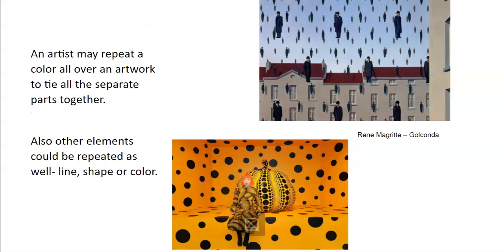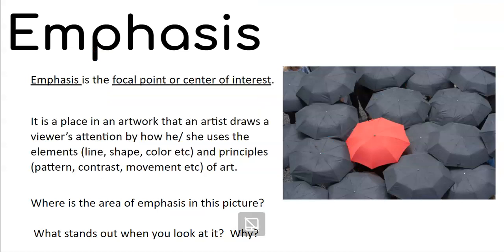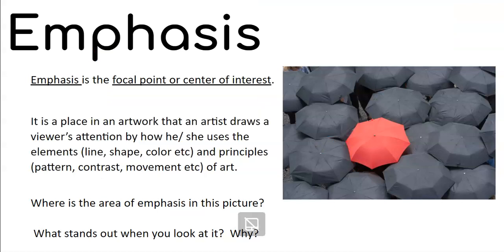Each of these artists is creating a unified artwork that really works together as one piece. The last thing we're going to talk about is emphasis. Emphasis is the focal point or the center of interest. If we look at these umbrellas, it's very easy to pick out which umbrella pops out at us — it's the one that's really different, a different color, and it really captures our interest. Emphasis is a place in the artwork where an artist draws the viewer's attention by how he or she uses the elements — line, shape, or color — and the principles — pattern, contrast, movement. That red umbrella is clearly the area of emphasis: there's a pattern of black umbrellas all the same, but that red one is really a pop of something different.